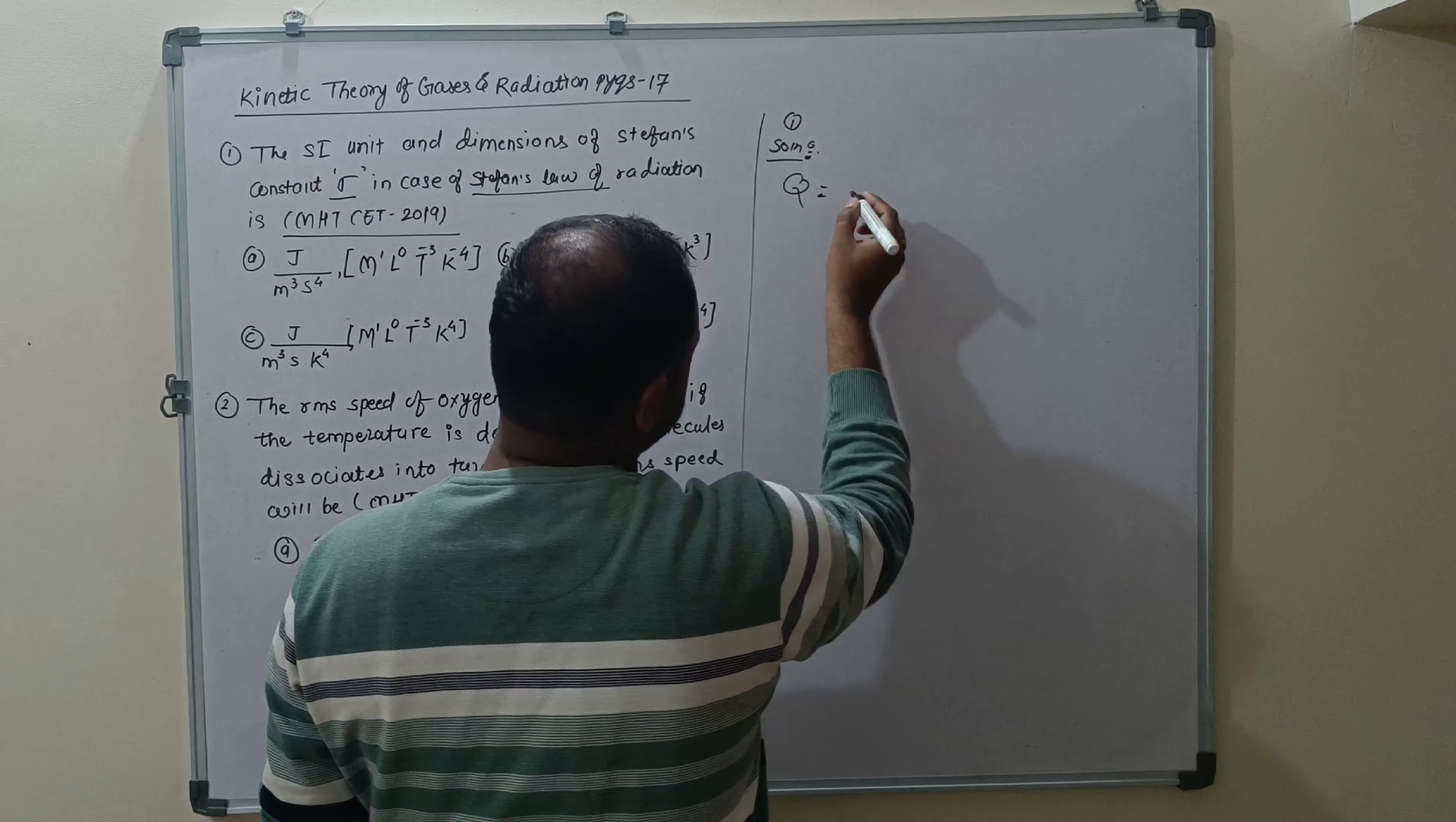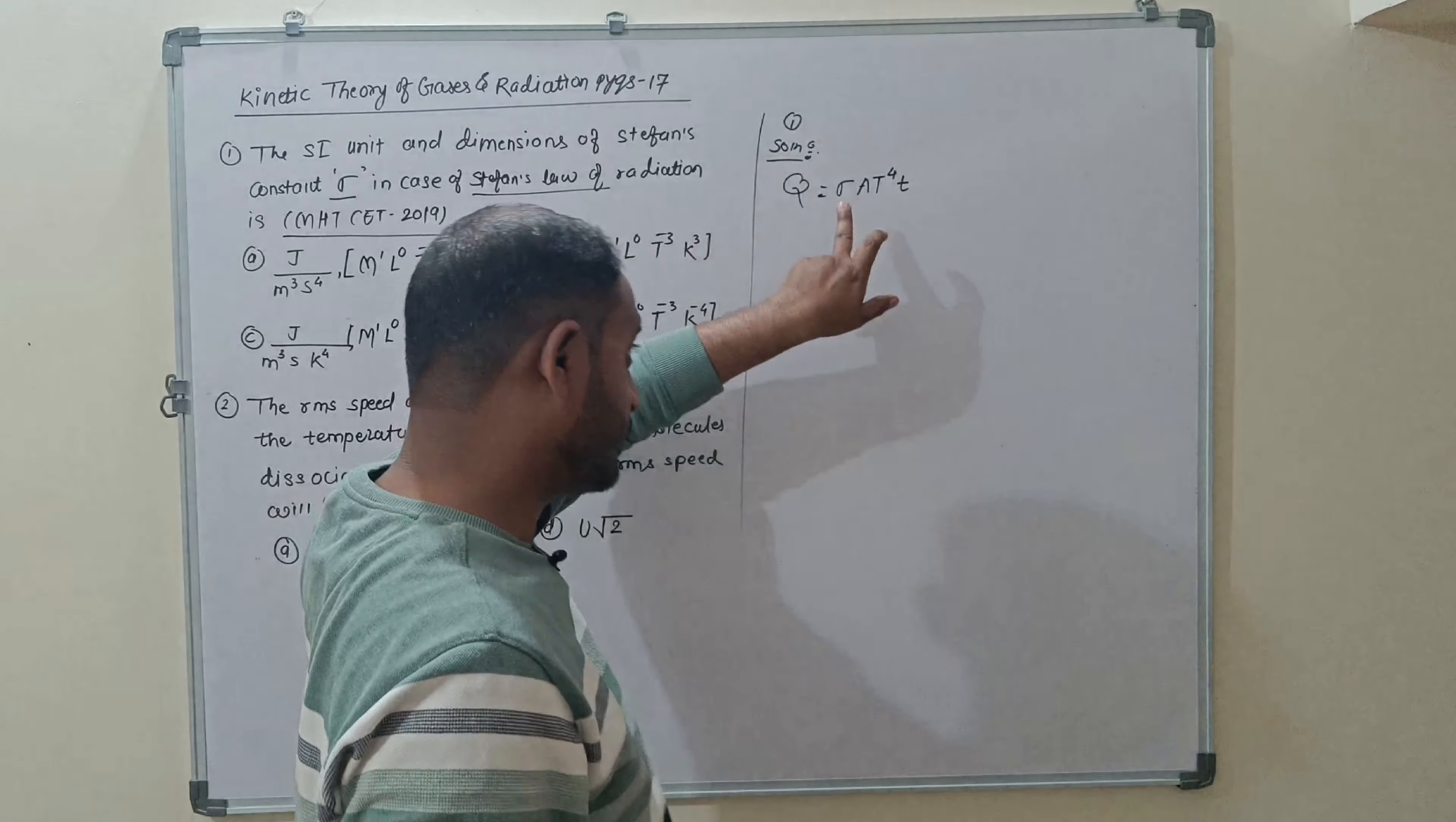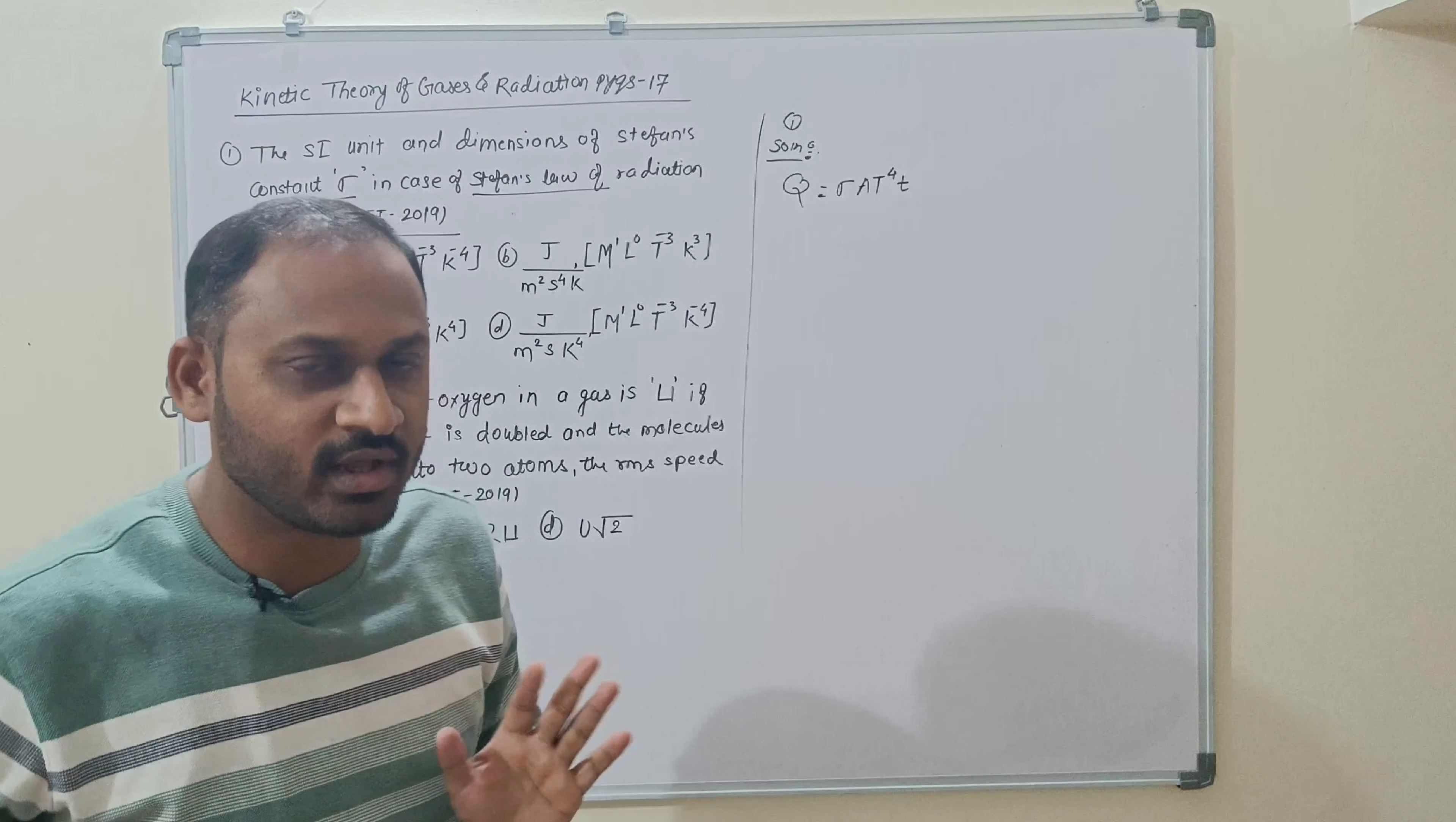Therefore, Q the amount of heat energy radiated from a black body is equals to sigma A T power 4 into small t. Sigma is Stefan's constant, A is area, T is temperature and small t is nothing but the time. And where Q is nothing but the amount of heat energy radiated from a black body.